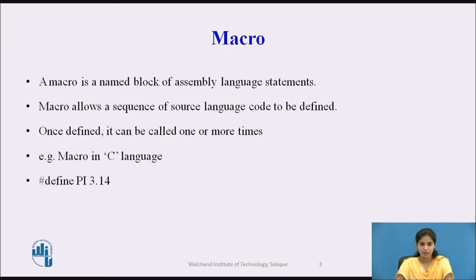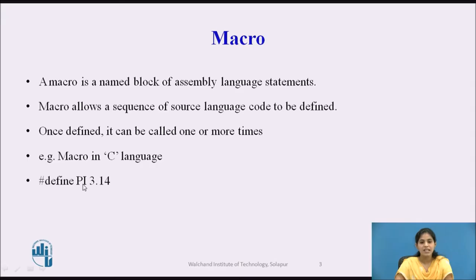A macro allows a sequence of source language code to be defined once. Once the macro is defined, it can be called one or more times in a program. In C language, we define a macro using the syntax: #define PI 3.14, where #define is a preprocessor statement, PI is the name of the macro, and 3.14 is the value of that macro.